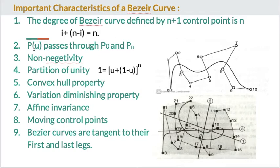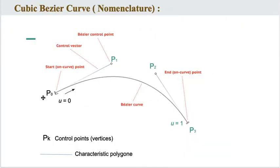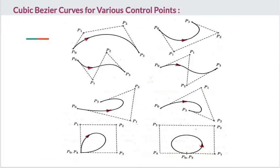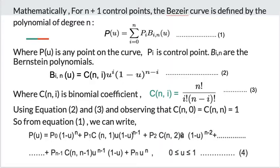The second characteristic is P(u) passes through P0 and Pn. We can see here P0 to P3. This figure shows the curve passes through the first and last control points. P(u) passes through P0 and Pn.